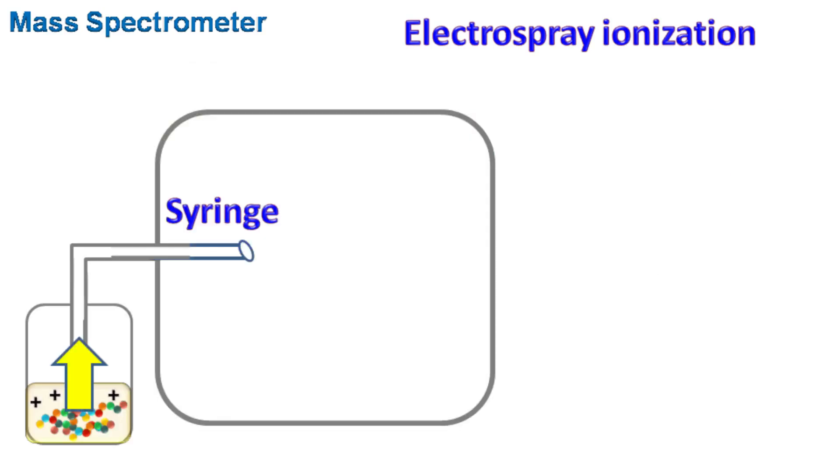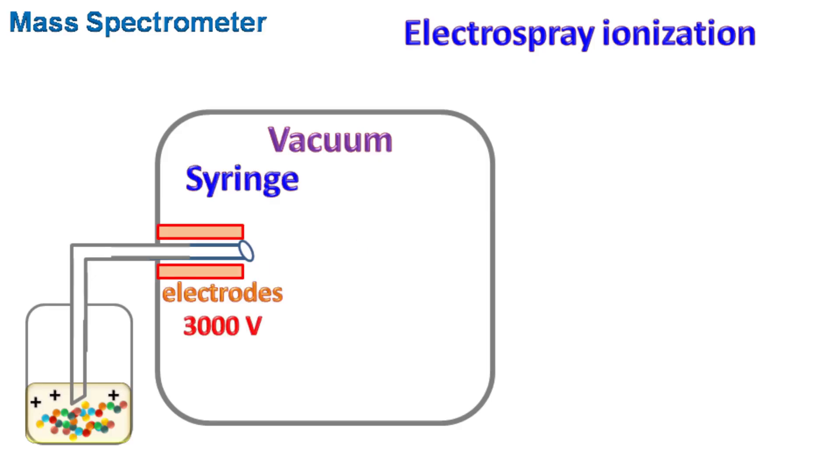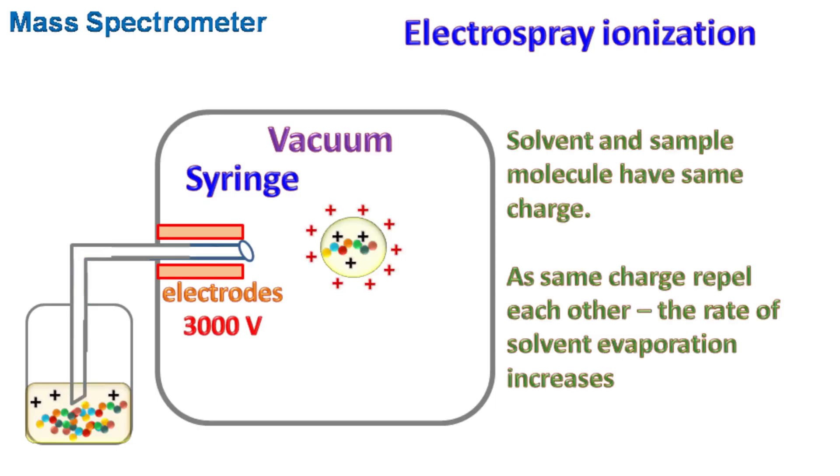This solution having charged molecules is passed through a syringe to create an aerosol. This process is known as nebulization. Because of vacuum in the chamber, the solvent molecules evaporate, leaving the charged molecule to enter the analyzer. To increase the rate of solvent evaporation, a strong potential difference of about 3000 volts is applied at the end of syringe. This makes the solvent molecules electrically charged. As the solvent molecules and the sample molecules have same charge, the rate of evaporation increases as both the charges repel each other.